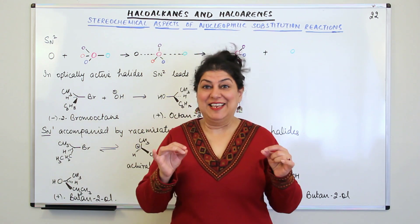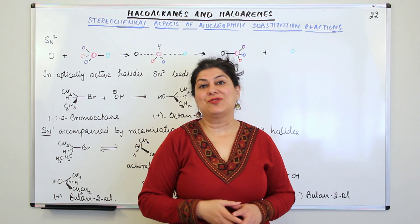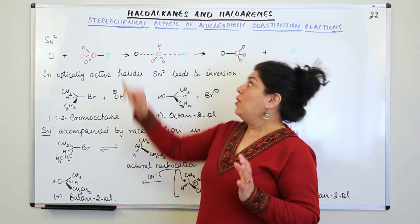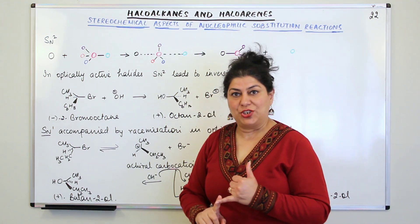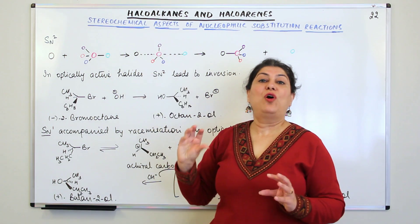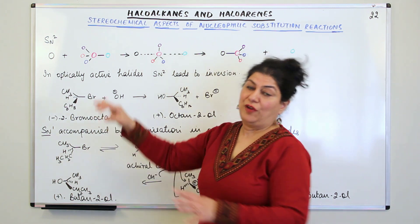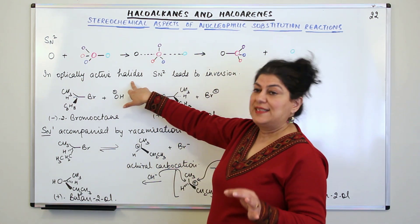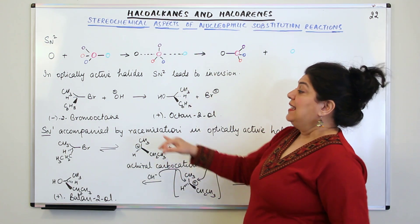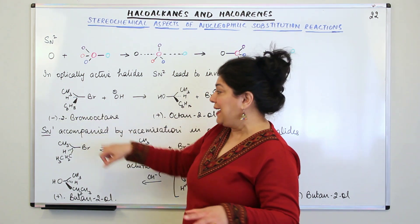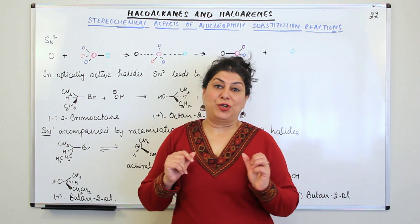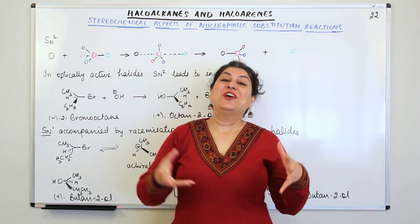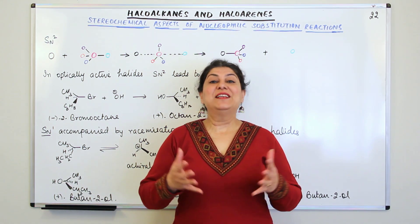For these two conclusions, it was important to explain the entire stereochemistry related to these two mechanisms. To summarize: in optically active halides following SN2 mechanism, the product has an inverted configuration. In optically active halides following SN1 mechanism, the product formed is a racemic mixture. These are the stereochemical aspects of nucleophilic substitution reactions. With this, I will wind up today's video.